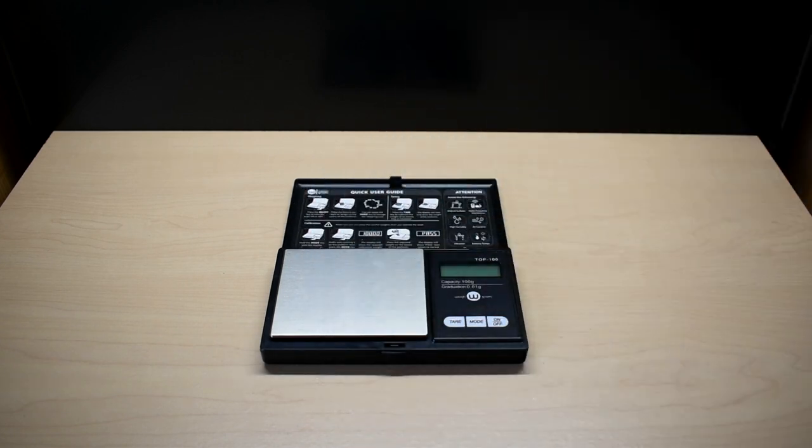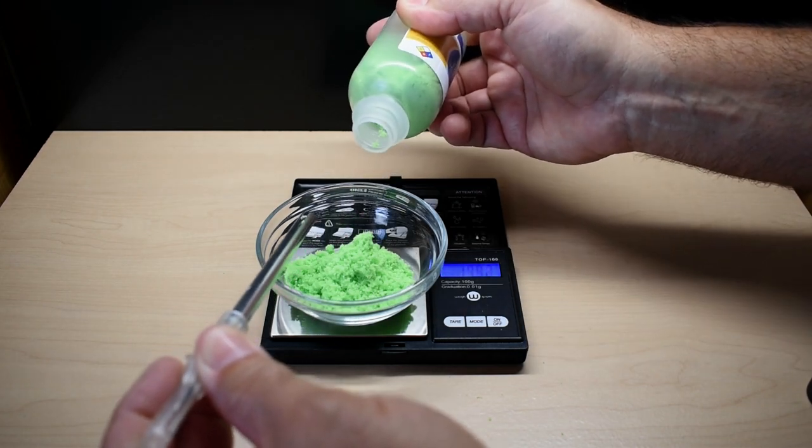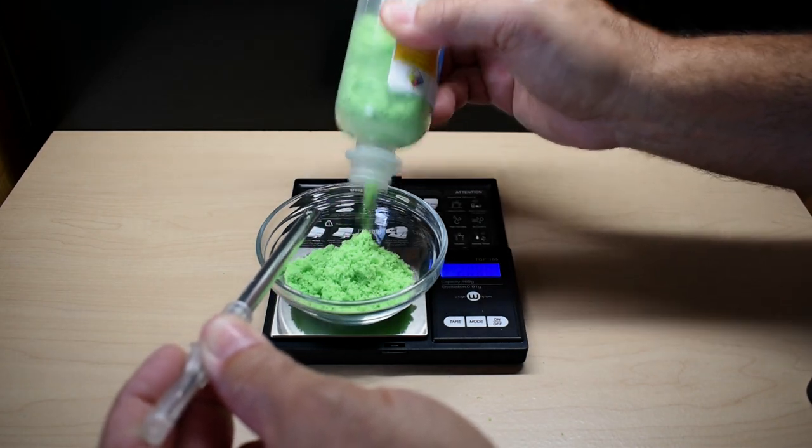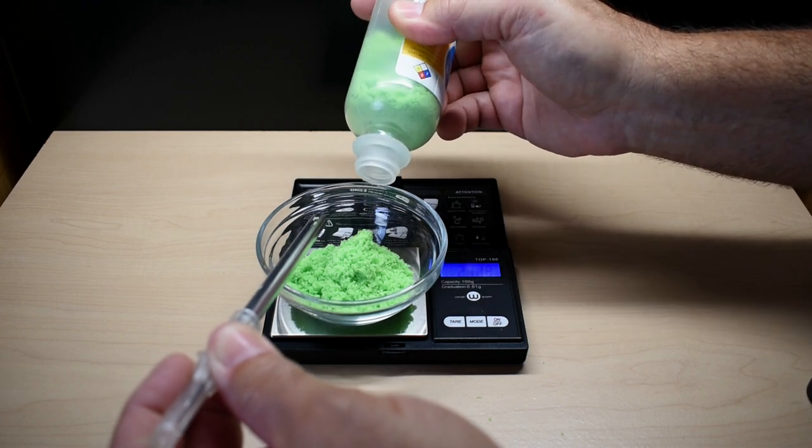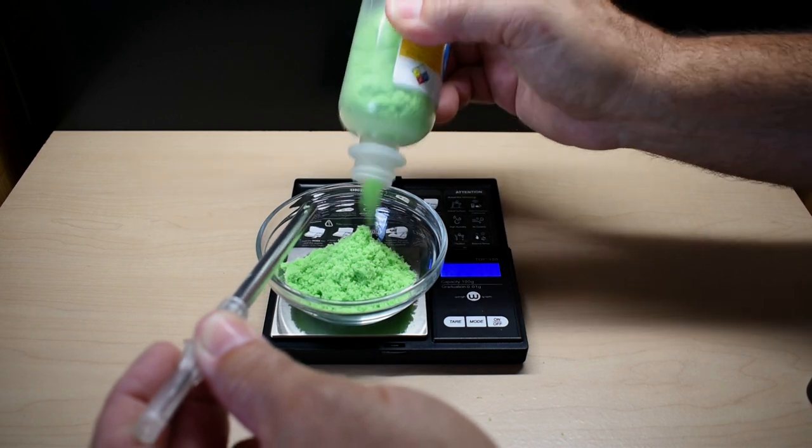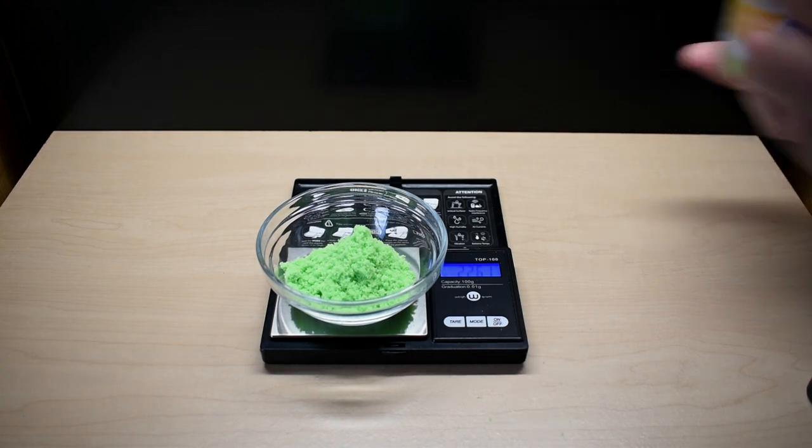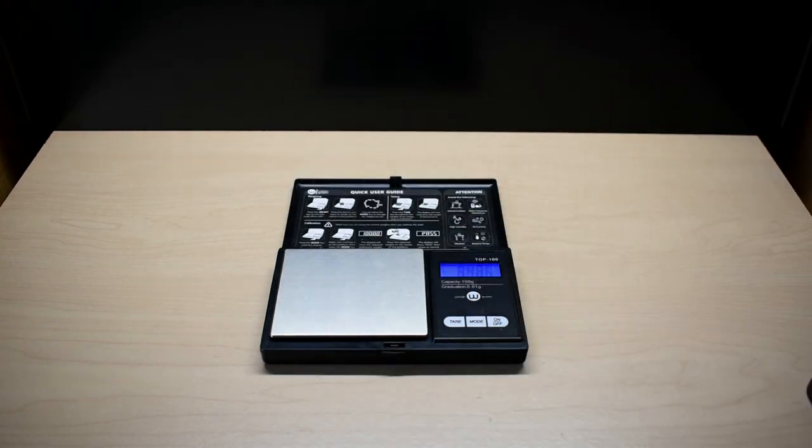Now let's measure the nickel chloride. We're doing pretty good now, we're at 19.9. 22.5. Close enough, 22.6, put that in there either way. Put this to the side.